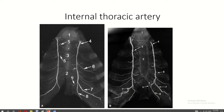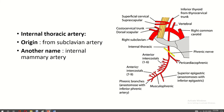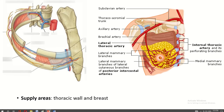Assalamu alaikum, welcome all to the Easy Human Anatomy channel. This is a short video about the internal thoracic artery. The internal thoracic artery arises from the subclavian artery. Another name for the internal thoracic artery is the internal mammary artery. It supplies the thoracic wall and breast.